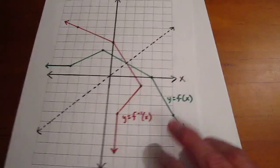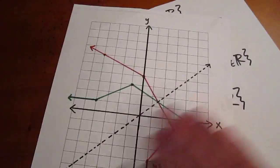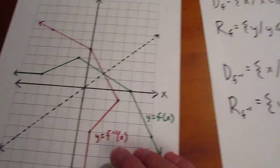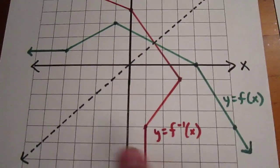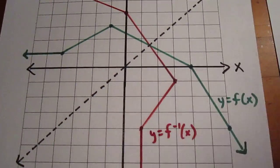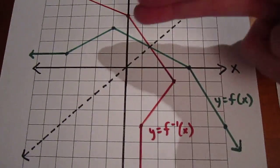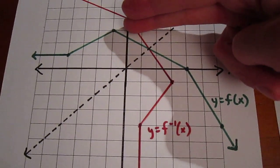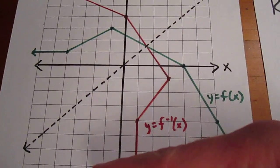Now, to determine the domain and range of each, we'll focus first on the original green function. We see that the domain is all x element of the reals, and the range is going to be all y values less than or equal to 3.